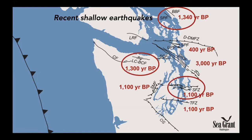I've circled the faults that we know or are almost completely certain also generated tsunamis. The Seattle fault did. And also interestingly, the Lake Creek–Boundary Creek fault, which runs through Lake Crescent, also generated a tsunami about 1,300 years ago. So if you feel a large earthquake, it's not just the marine coasts you need to be worried about — you need to be away from any large bodies of water.